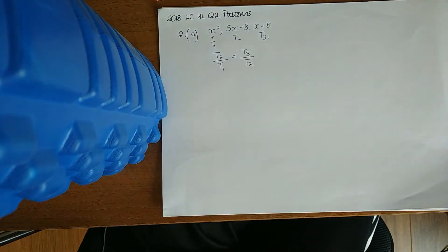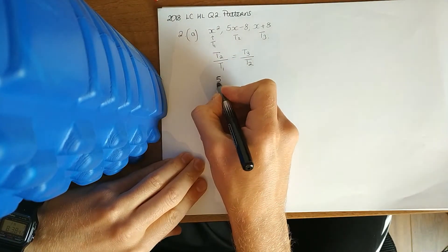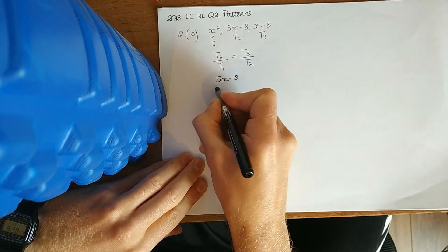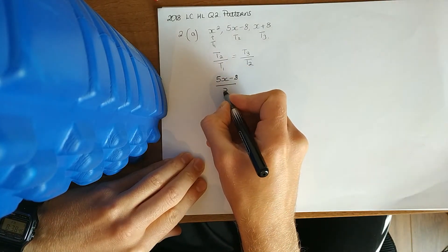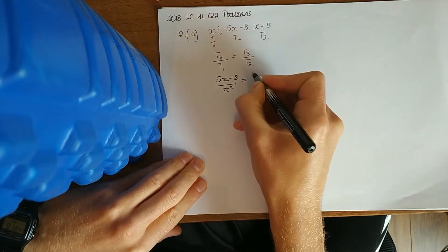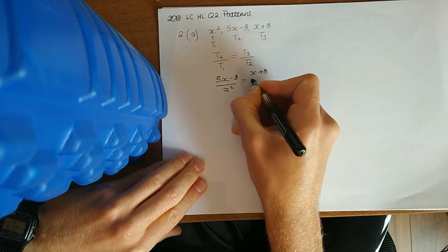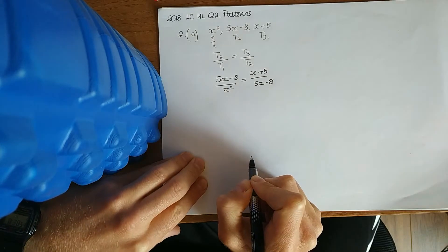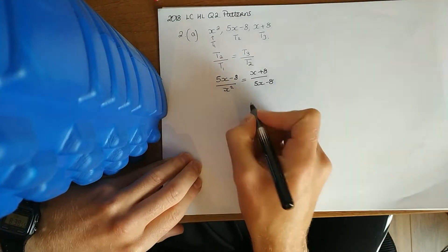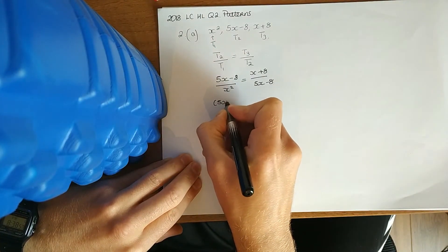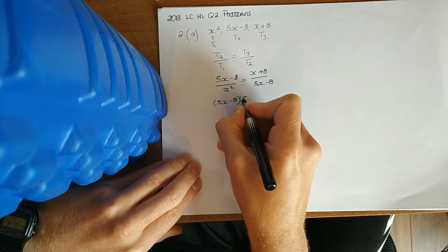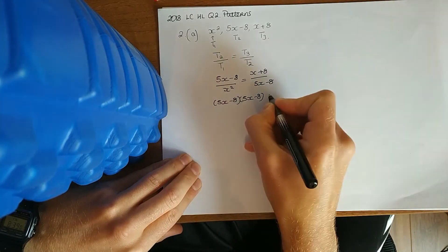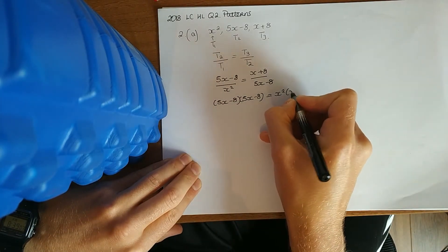Now, all you've got to do is substitute in these values. So term 2 is 5x minus 8 over term 1, same as term 3 over term 2. Now we're just doing a bit of algebra, cross multiplying, getting rid of the fractions. 5x minus 8 times 5x minus 8 is equal to x squared times x plus 8.